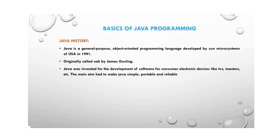Basics of Java programming includes the subconcept of evolution of Java, also called Java history. Java is a general purpose object-oriented programming language developed by Sun Microsystems of USA in 1991. It was originally called Oak, developed by scientist James Gosling. Java was invented for the development of software for consumer electronic devices like TV, toaster, washing machine, fridge, etc.